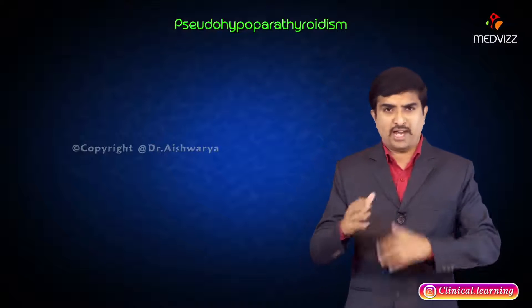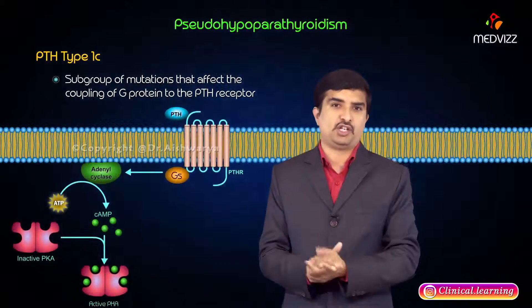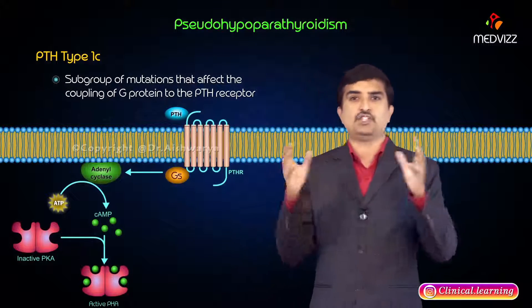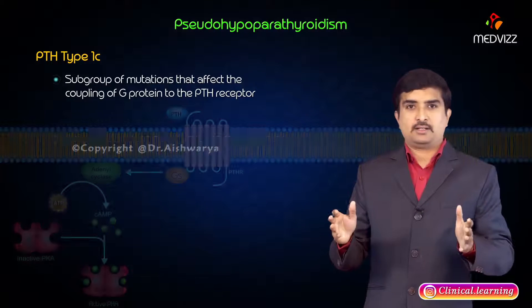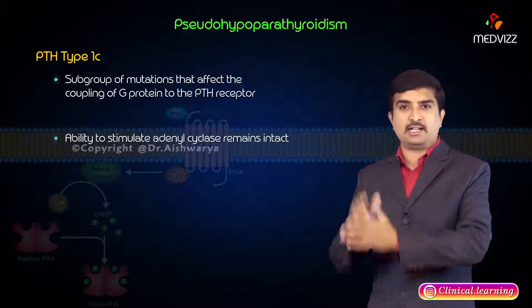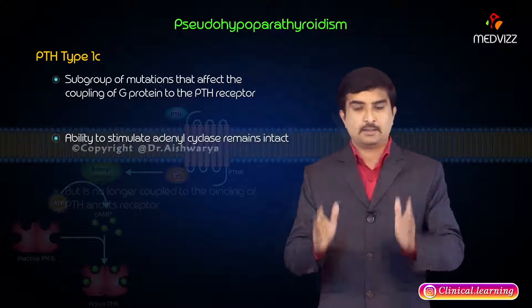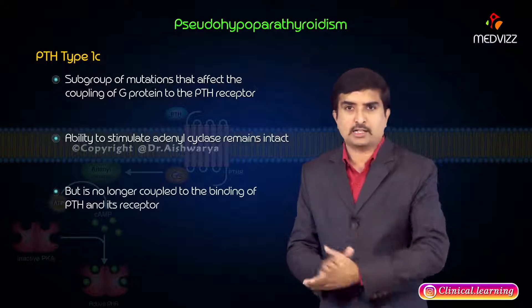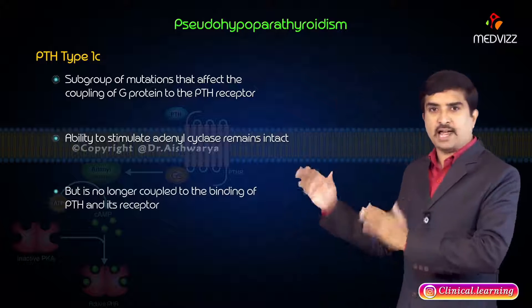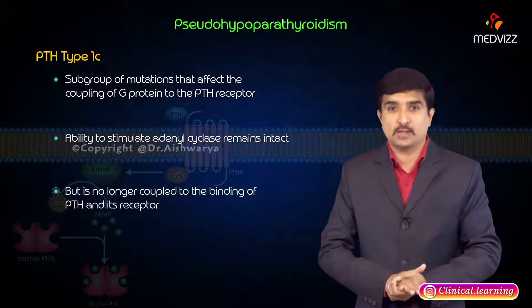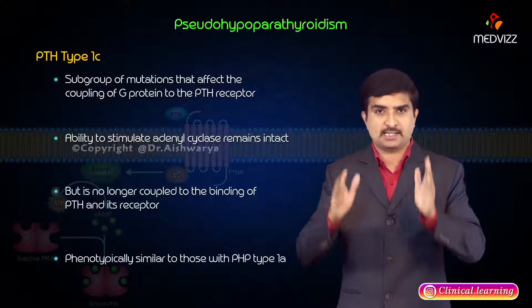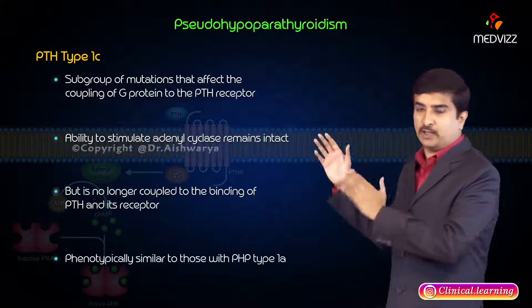The rare PHP type 1c refers to a subgroup of mutations that affect the coupling of the G protein to the PTH receptor. In this condition, the ability to stimulate adenylate cyclase remains intact but is no longer coupled to the binding of PTH to its receptor. Patients with PHP type 1c are usually phenotypically similar to those with PHP type 1a.